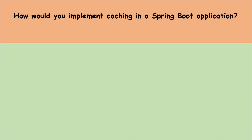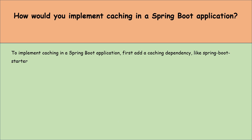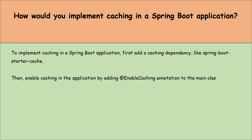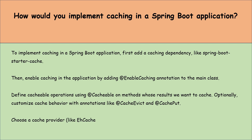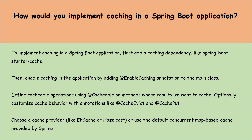How would you implement caching in a Spring Boot application? First, add caching dependencies like spring-boot-starter-cache. Then enable caching in the application by adding the @EnableCaching annotation to the main class. Next, define cacheable operations using the @Cacheable annotation on methods whose results we want to cache. Optionally, customize cache behavior with annotations like @CacheEvict and @CachePut. Finally, choose a cache provider like EhCache or Hazelcast, or use the default ConcurrentMap-based cache provided by Spring.